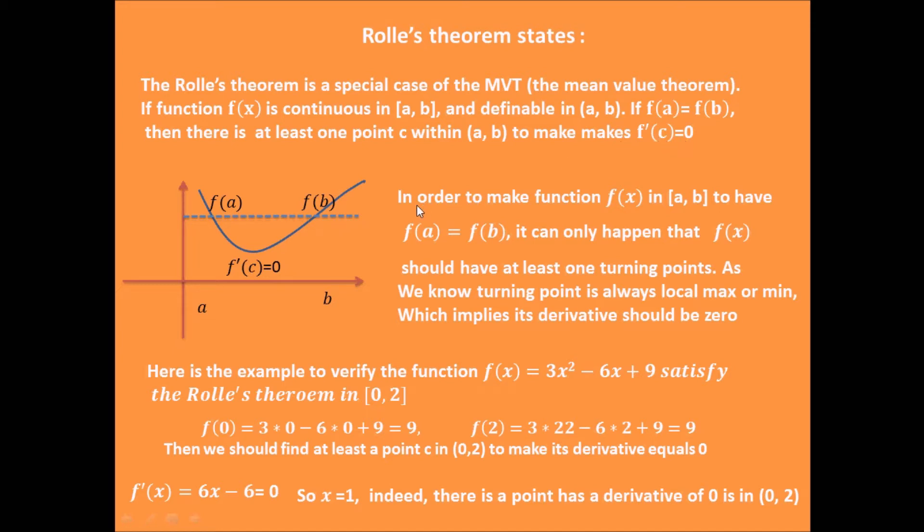In fact, it's easy to understand this statement, because if a function f(a) equals f(b), it can only happen that the function at least has one turning point. As we know, the turning point is always local maximum or minimum, which means the derivative should be zero.